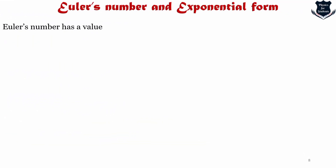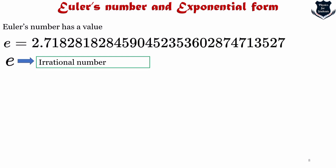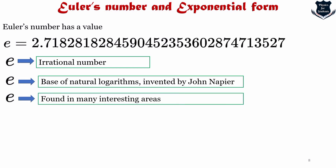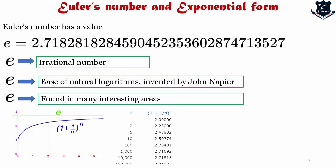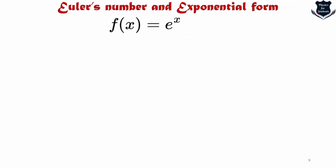Euler's number has a value that is quite interesting. E is actually an irrational number — it cannot be written as a simple fraction. E is the base of the natural logarithm, which was invented by the famous mathematician John Napier, and E is found in many interesting areas of mathematics. The function f(x) = e^x has some very interesting properties worth noting.